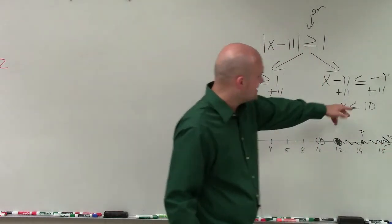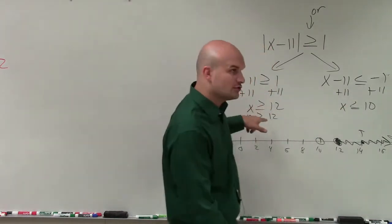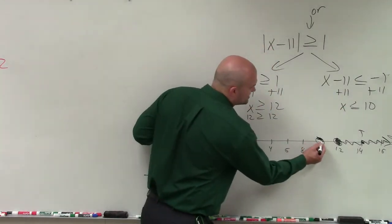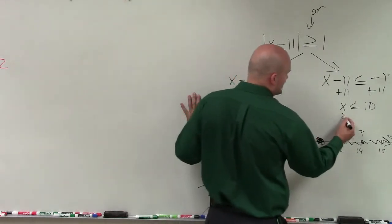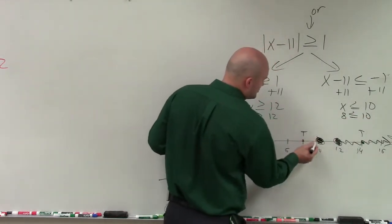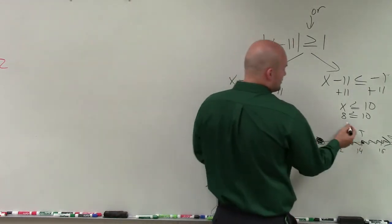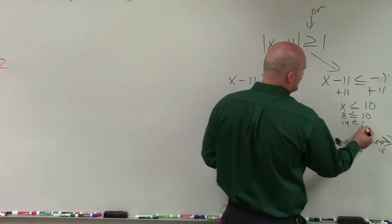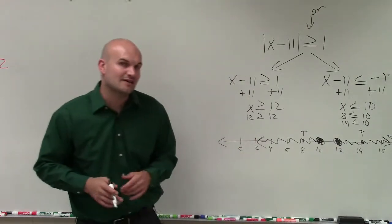Now the next thing is you can see this is a less than or equal to. So therefore, this 10 is also going to be a part of the solution. Then I just choose another test point. 8 is less than or equal to 10. That's true. So therefore, I shade to the right. If, let's say, I chose 14 again, 14 is less than or equal to 10. Well, that is false, right? So for this inequality, 14 is false. That's why I would shade to the left in that case.